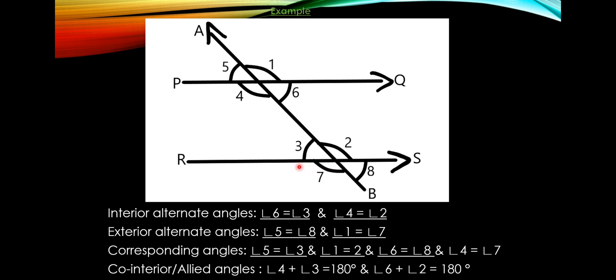For co-interior or allied angles: angle 4 and angle 3 are one pair. Since they lie on the same side of the transversal in the interior of the parallel lines, angle 4 plus angle 3 equals 180 degrees. Likewise, angle 6 and angle 2 are another pair of co-interior angles, so angle 6 plus angle 2 equals 180 degrees.